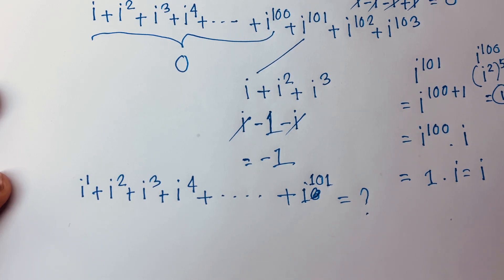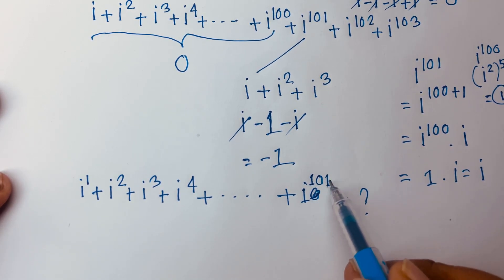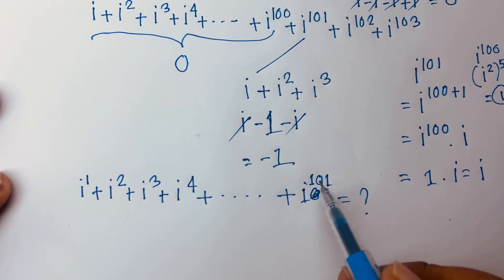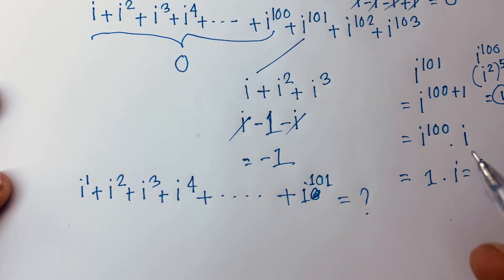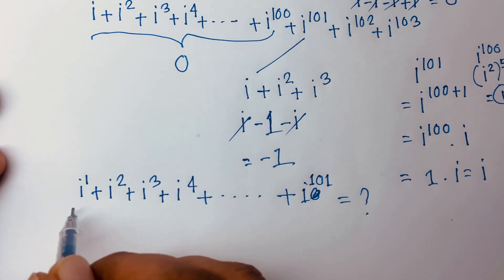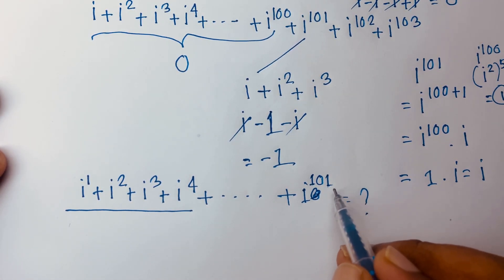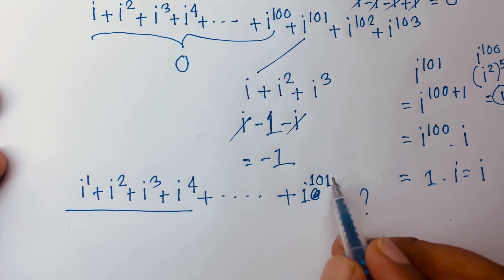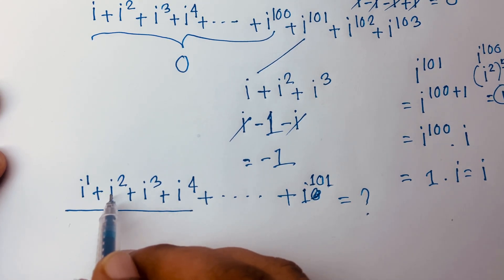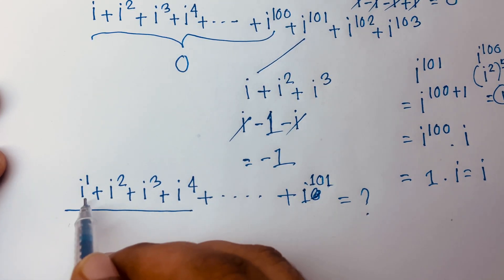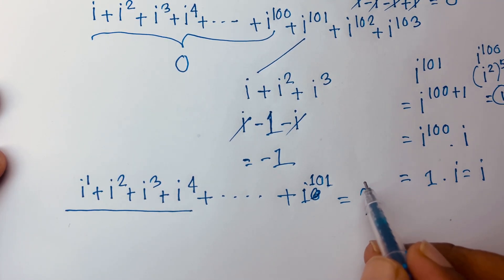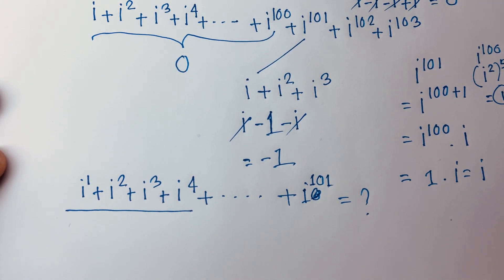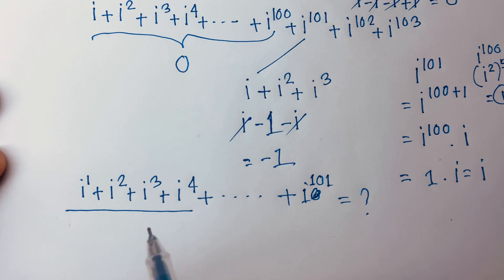Here's the trick: 101 divided by 4 gives remainder 1. If the remainder is 1, take the first term. If remainder is 2, take the first and second terms. If remainder is 3, take the first, second, and third terms. If remainder is 4, the answer is zero because four terms add to zero. Thank you all — if you enjoyed this video, please subscribe to my channel. Goodbye!